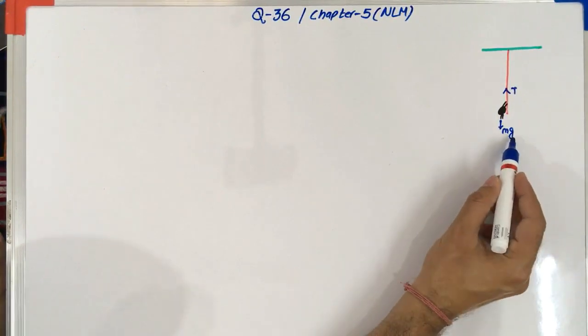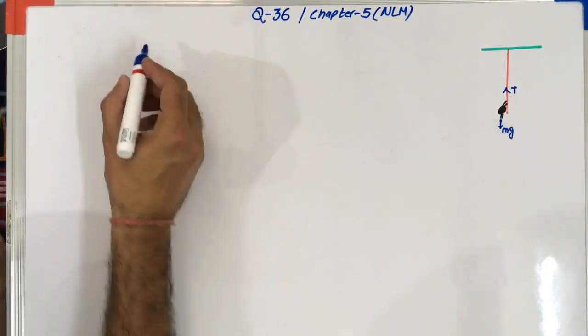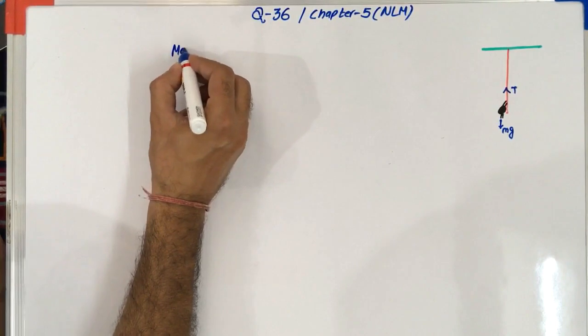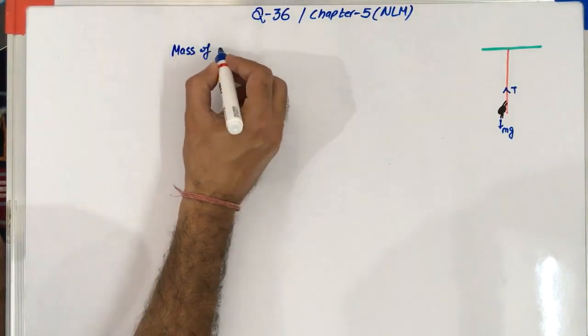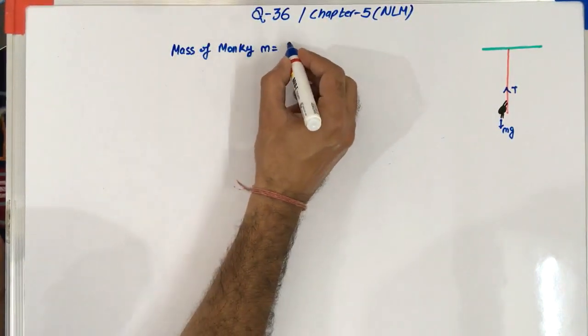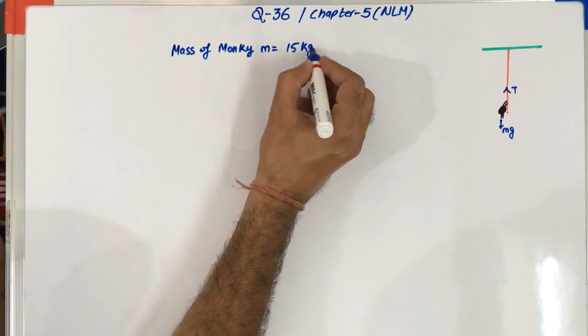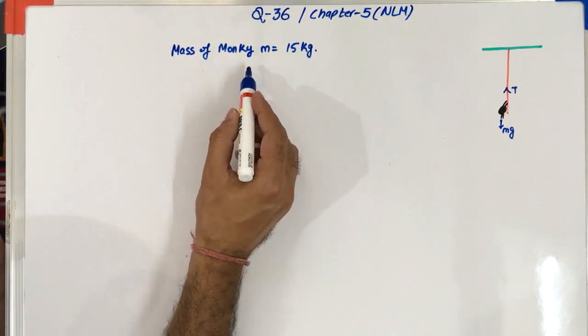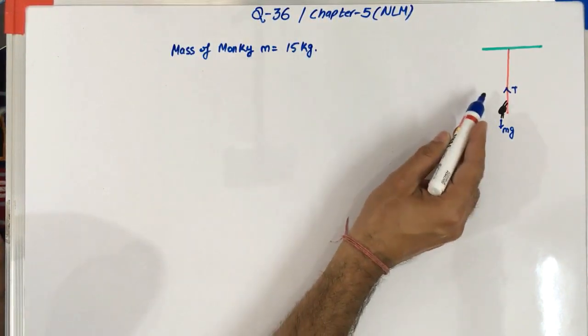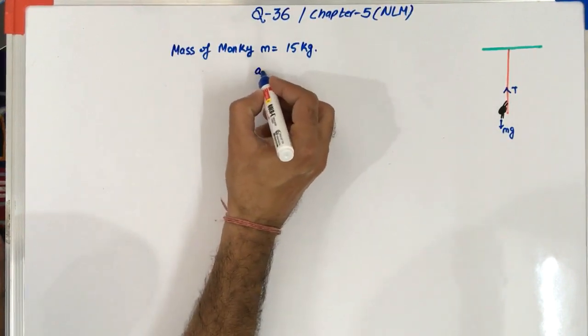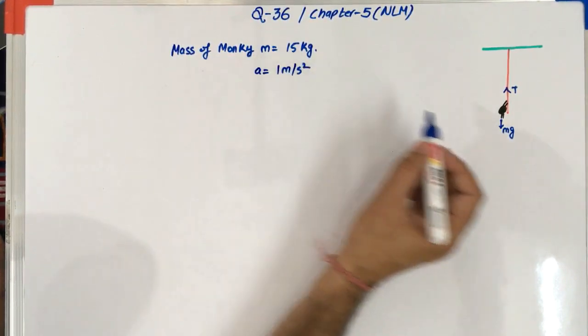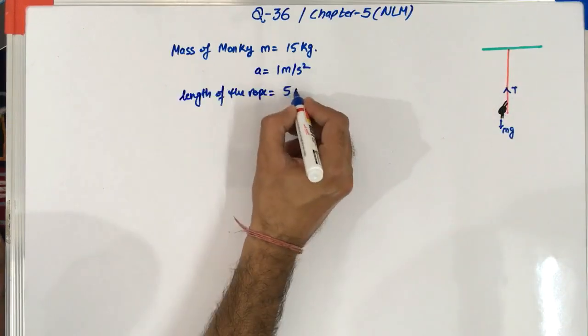So first of all we will see what is the data given in this problem. So the mass of monkey, m, is 15 kg. The acceleration that he requires to climb up on the rope is 1 meter per second square. And the length of the rope is 5 meter.